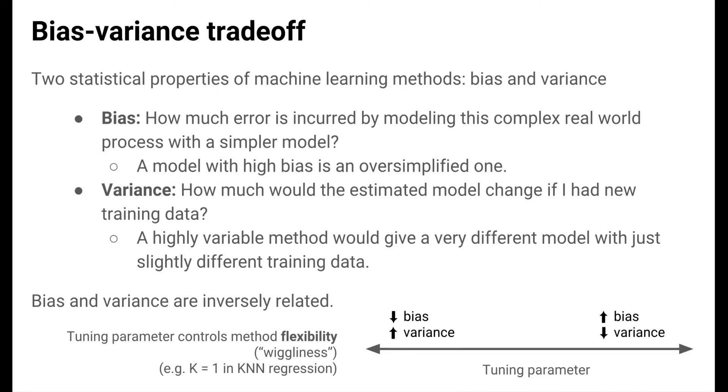Generally, bias and variance are inversely related. When we vary tuning parameters of machine learning methods, we can succeed in decreasing either bias or variance, but this comes at the expense of the other. Varying tuning parameters is a matter of tuning a method's flexibility. This is a term that we'll use repeatedly in studying different methods. But for now, think of flexibility as wiggliness. For example, the function learned in one nearest neighbors regression was quite wiggly. We would say that k equals 1 results in an overly flexible method.